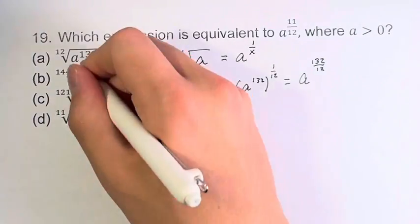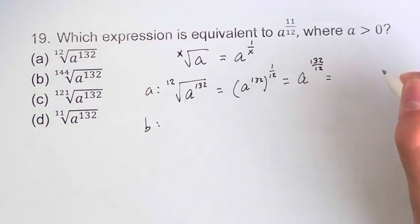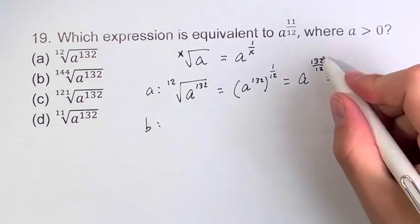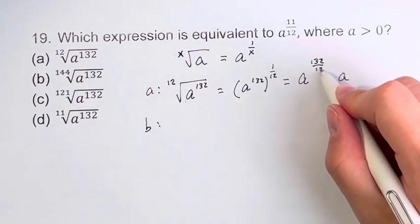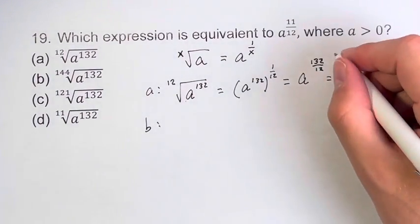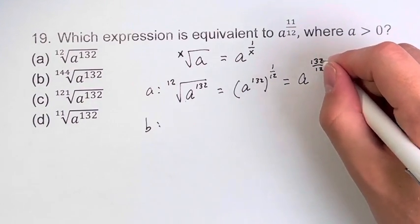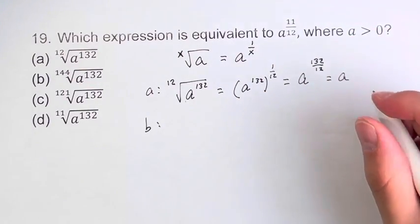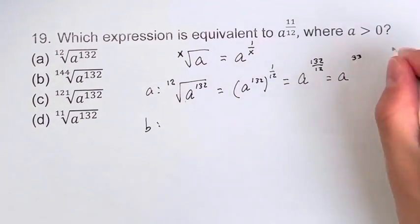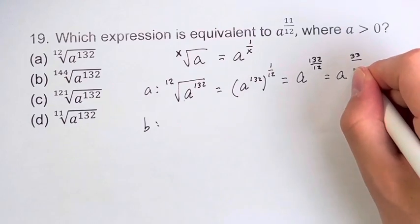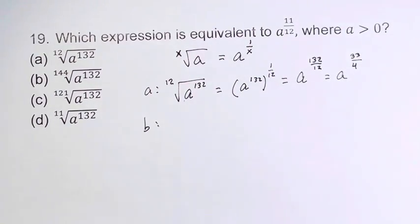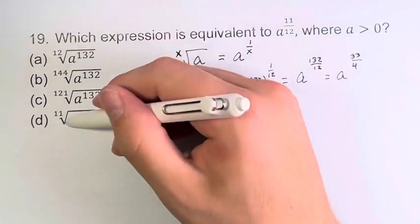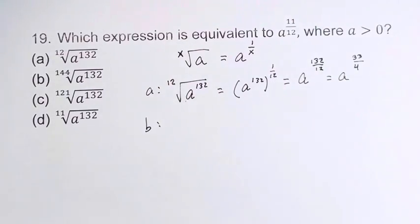We should simplify this before we continue. 132 divided by 12 — both of these are divisible by 4. So 132 divided by 4 is 33, and 12 divided by 4 is 4. I'm just going to simplify these because these are big numbers, and we want them to turn into 11 over 12.